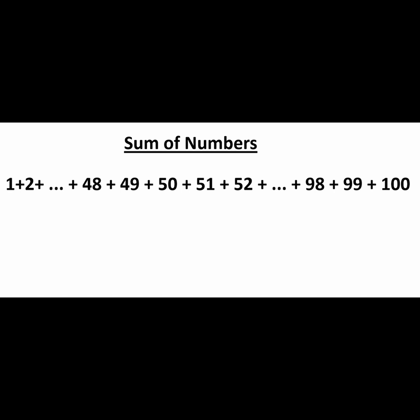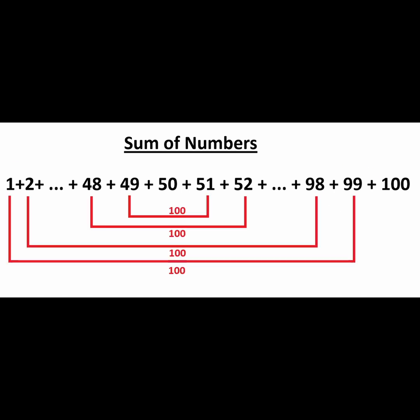Gauss noticed that the numbers matched together across the number line. For example, the number 1 could be added to the number 99 to get the even sum of 100. Additionally, the number 2 could be added to the number 98 to also yield the sum of 100. This was a general pattern in the number set.